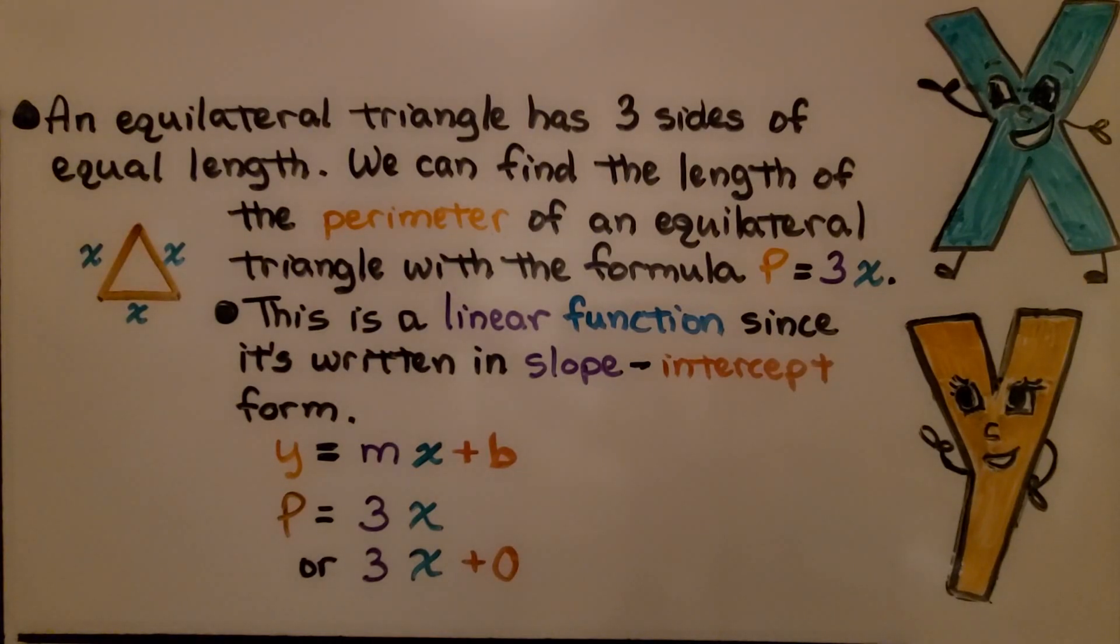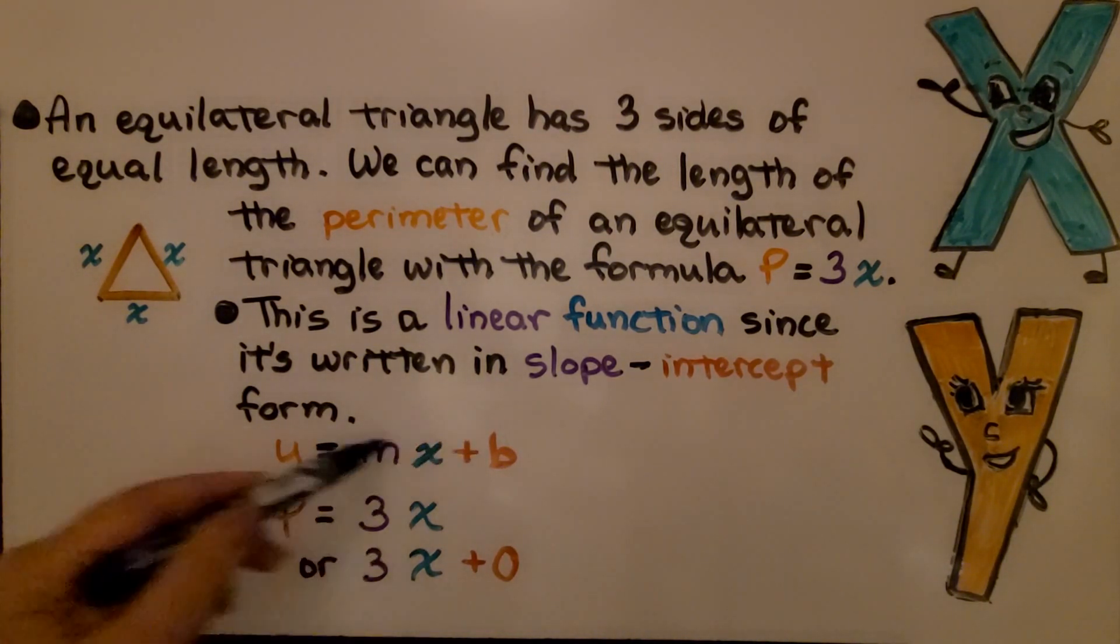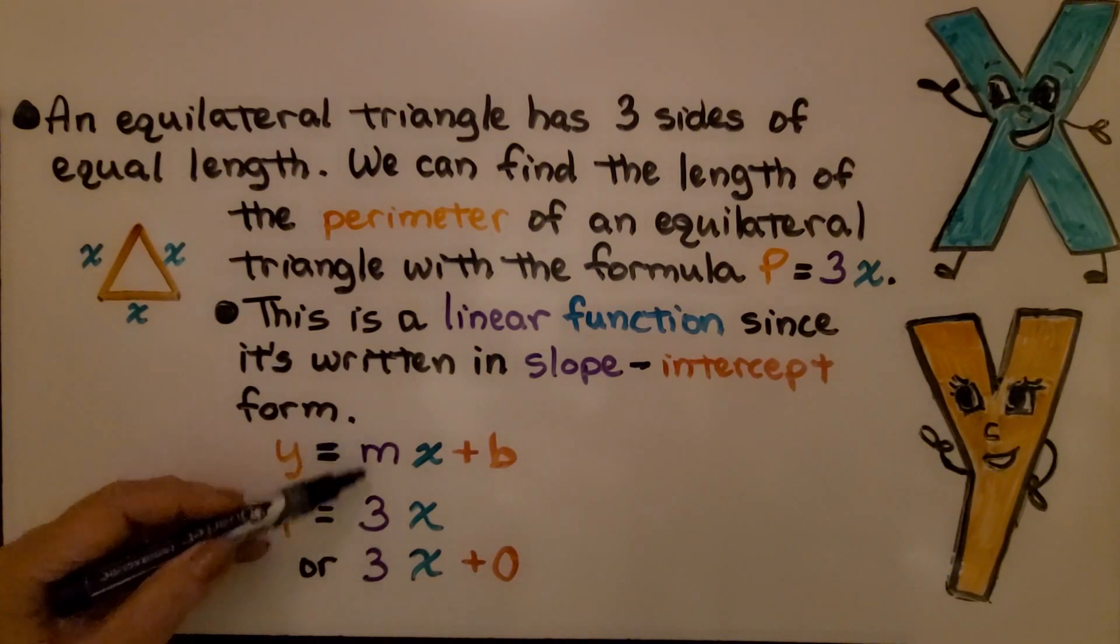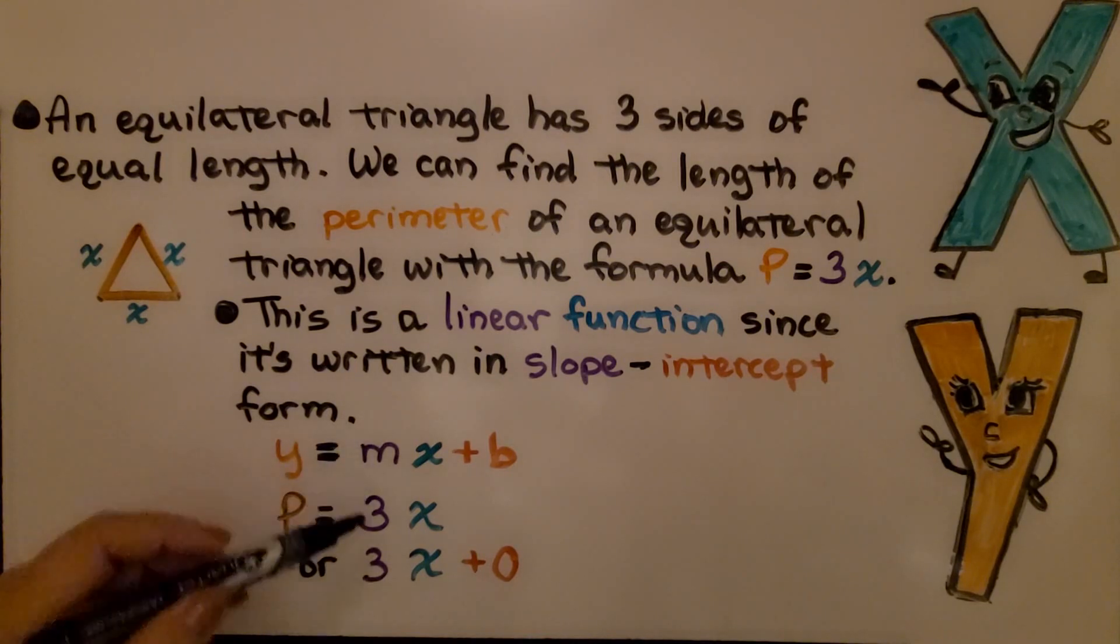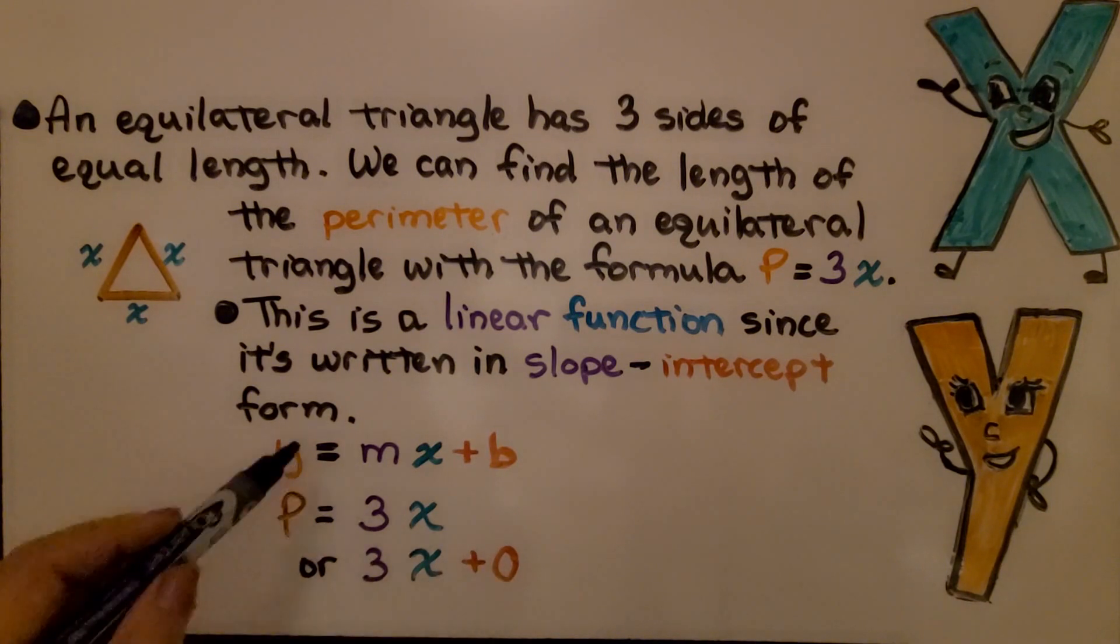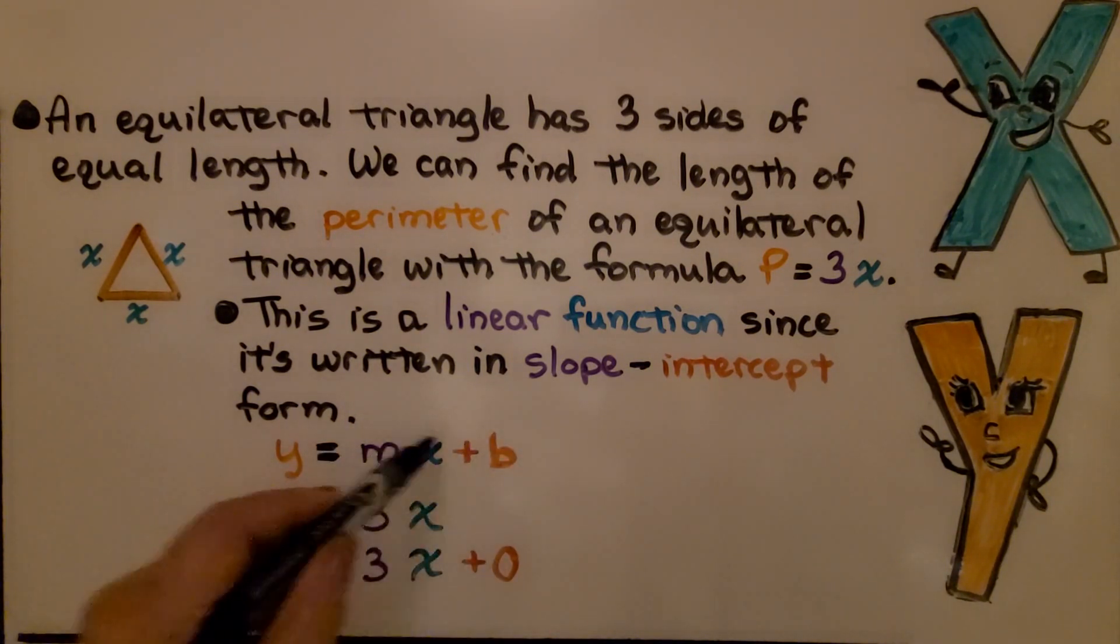An equilateral triangle has three sides of equal length. We can find the perimeter of an equilateral triangle with the formula p equals three times x. This is a linear function since it's written in slope intercept form. Here we have slope intercept form, and the p would be our y value, the three would be our m value, the slope, and then we have our x. We could also say it's three x plus zero to make it look like it's got the plus b on it.